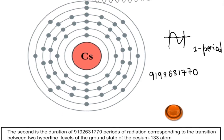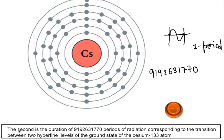Its definition technically is given as: the second is the duration of 9,192,631,770 periods of radiation corresponding to the transition between two hyperfine levels of the ground state of cesium-133 atom.